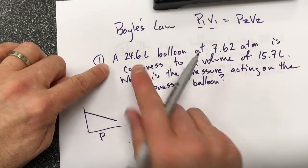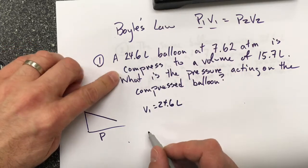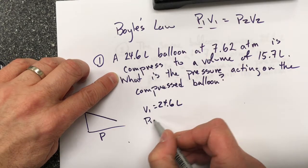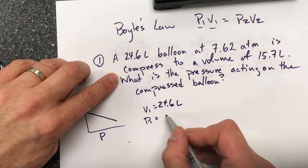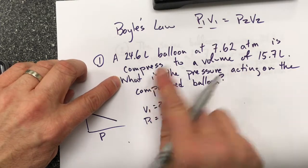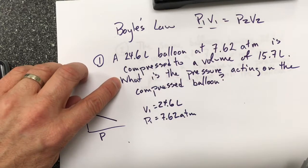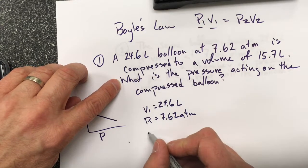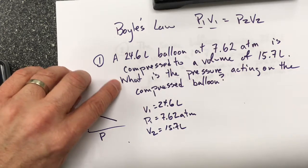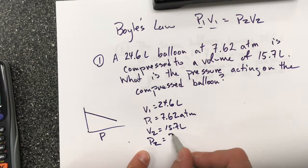In this question, I have a volume of 24.6 liters for a balloon at 7.62 atm. So that's the pressure at 24.6, 7.62 atm, is compressed to a volume of 15.7 liters. So my new volume is 15.7 liters, and it's asking what is the pressure acting on the compressed balloon? So what is P2?